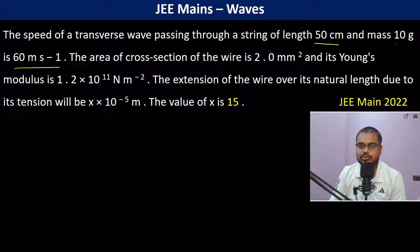The area of cross-section of the wire is 2 millimeters squared and Young's modulus is given. The extension of the wire over its natural length due to tension will be calculated.